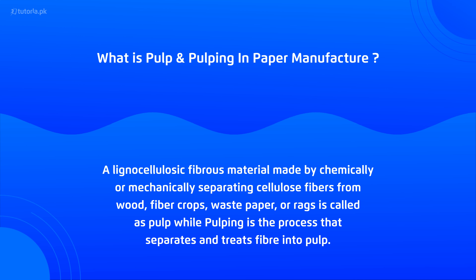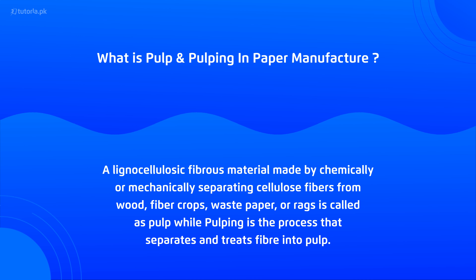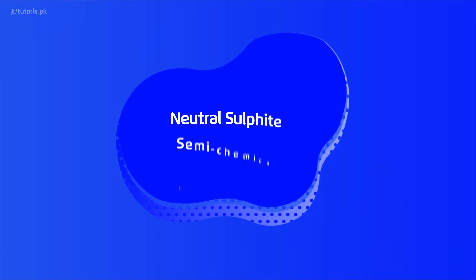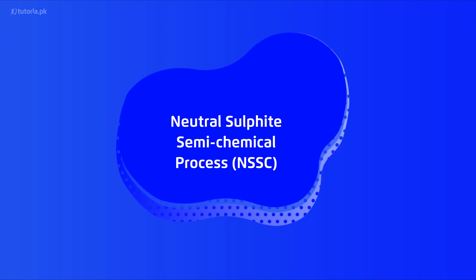Pulp is the cellulosic fiber material obtained by chemically or mechanically treating the raw material. The process by which it is treated is called pulping. Methods of chemical pulping can be alkaline, acidic, or neutral. For neutral conditions, we use the neutral sulfite semi-chemical process, which utilizes sodium sulfide buffered with sodium carbonate and sodium hydroxide, which utilizes the organic acid from the raw material. The paper manufacturing process starts with cutting of raw material, then dry cleaning through air, wet cleaning through water, screening, and magnetic separation.